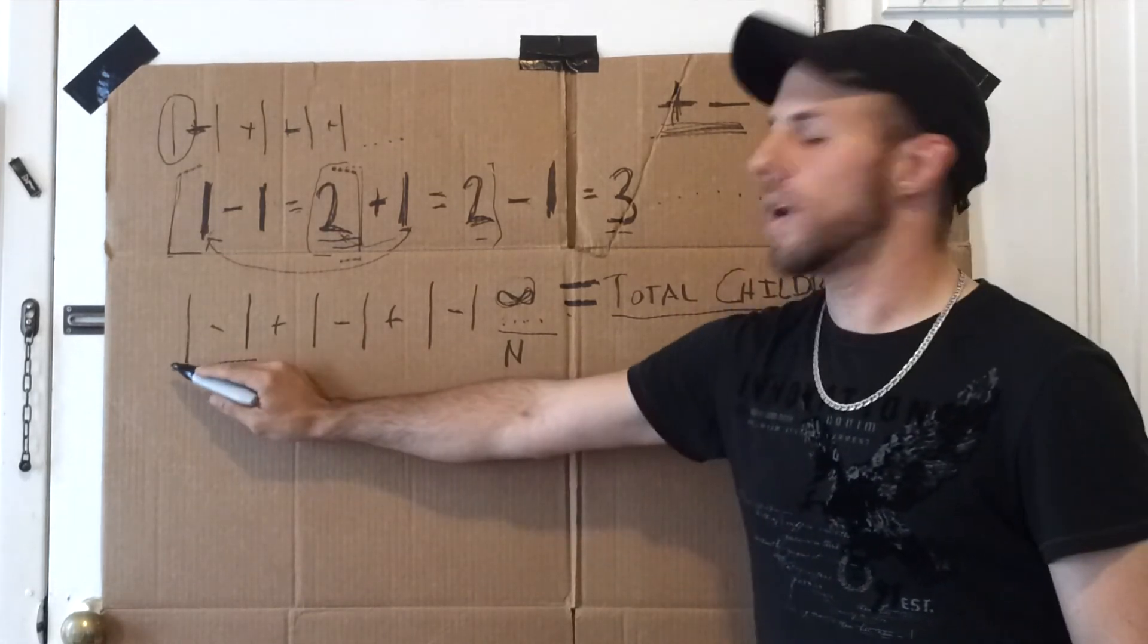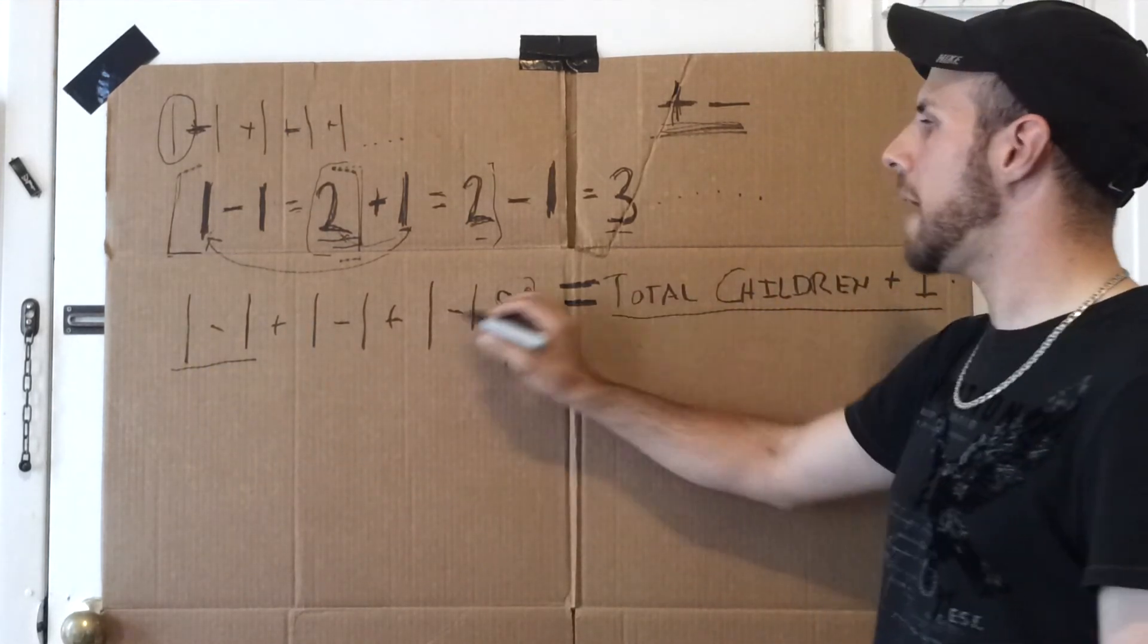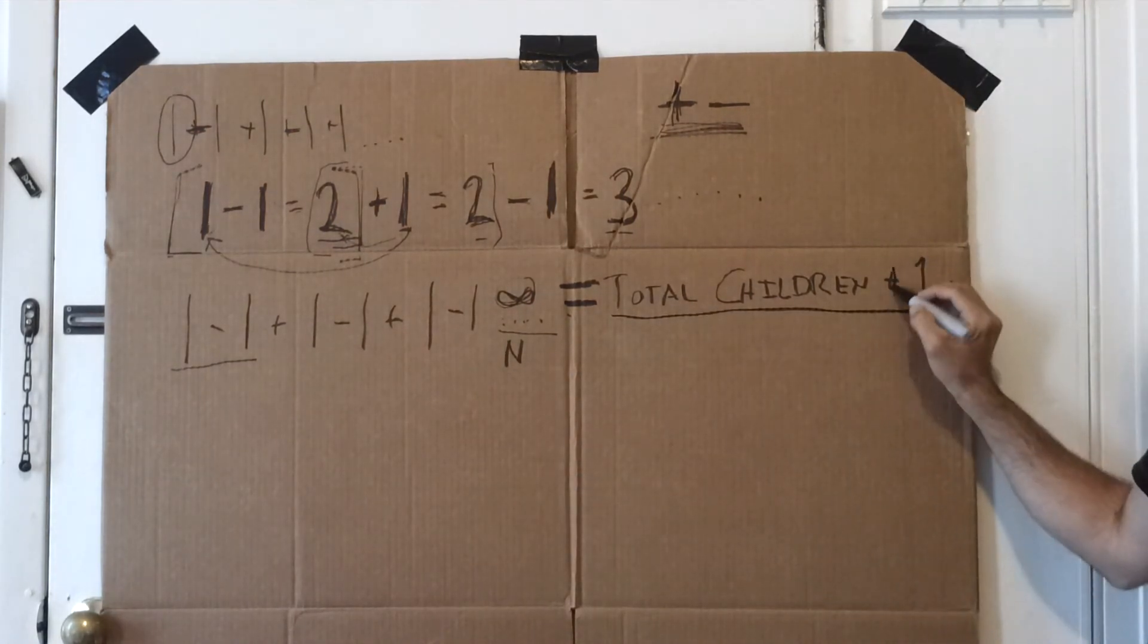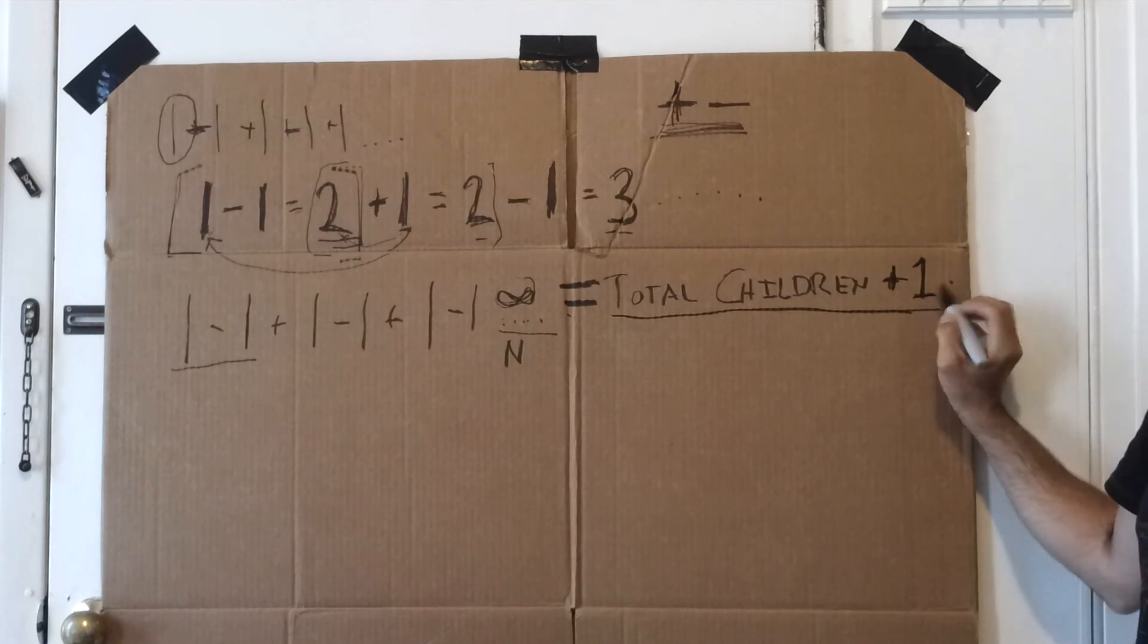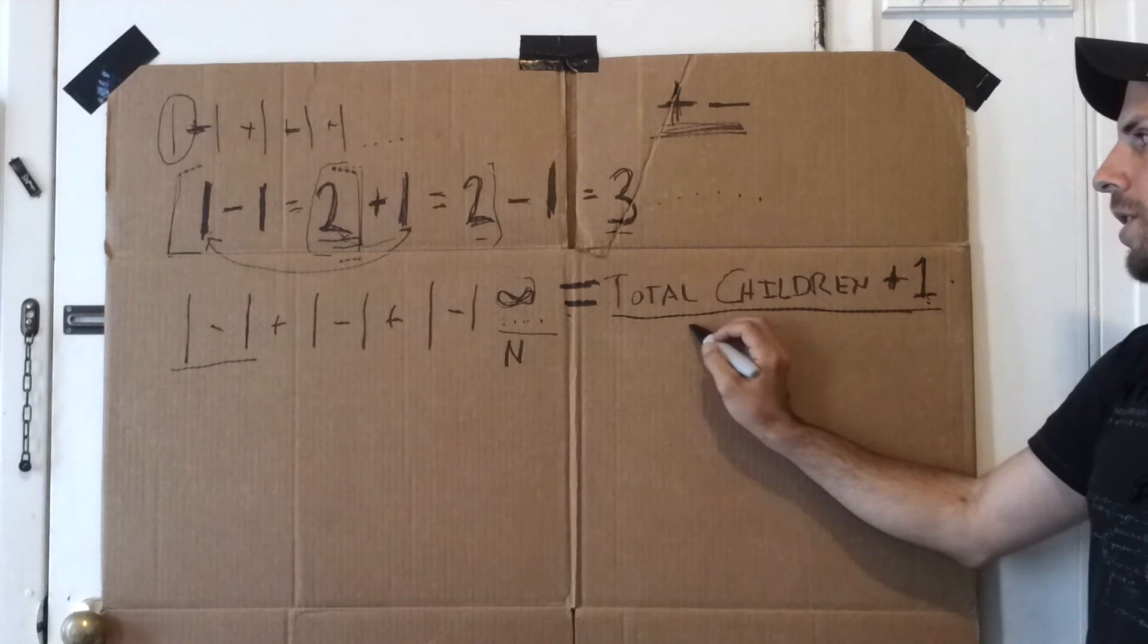So Grandi's series is 1 minus 1 plus 1 minus 1 plus 1. The answer to it is the total number of children plus 1, the pregnant woman, the mother. That's the answer to Grandi's series.